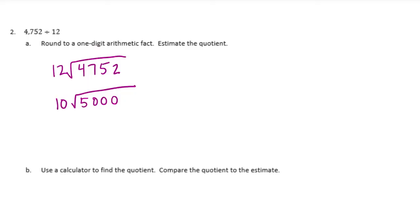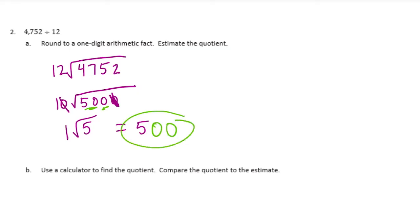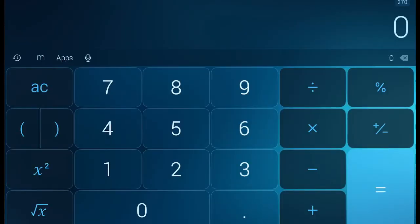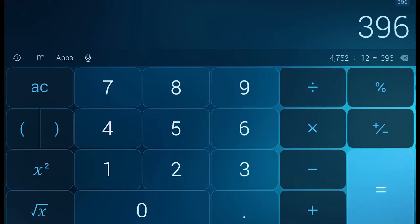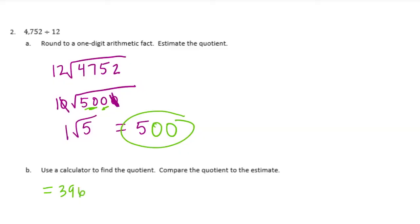So we have 5,000 divided by 10, which I'll turn into 5 divided by 1 by canceling two zeros, but I still have two zeros left. So 5 divided by 1 is 5, and putting the two zeros back gives 500. My estimate is 500. Using a calculator: 4,752 divided by 12 equals 396, which is pretty close to 500.